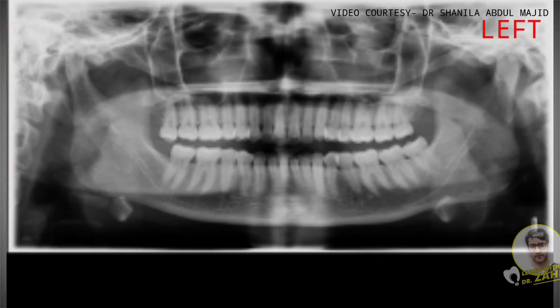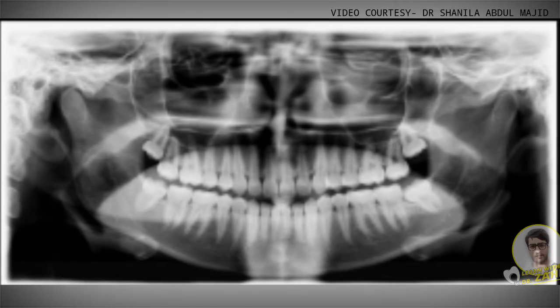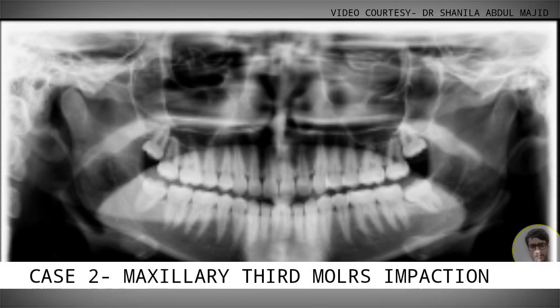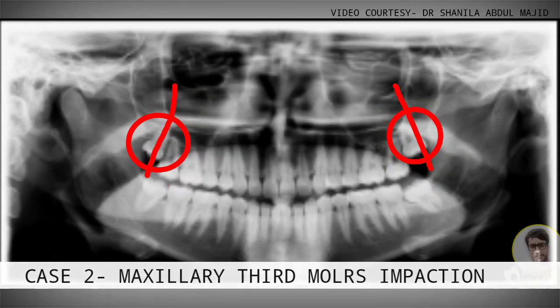Next we move on to the pathologies seen in the OPG. This is an impaction case wherein you can see both maxillary third molars are impacted — this is more of a vertical impaction. This can be identified by the long axis of the 8s when compared with the long axis of the 7s, which is how we determine the angulation of third molar impactions.